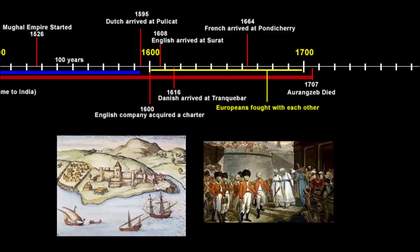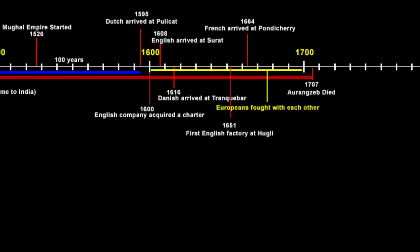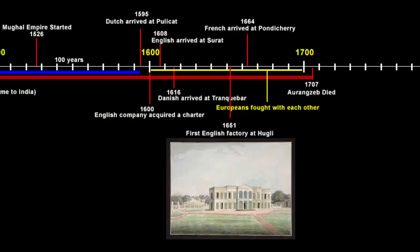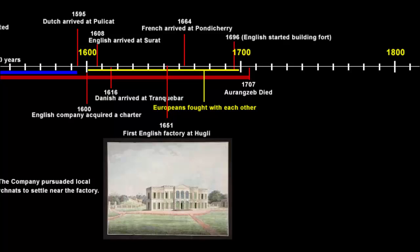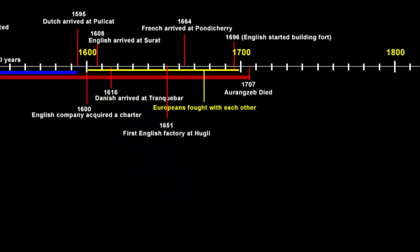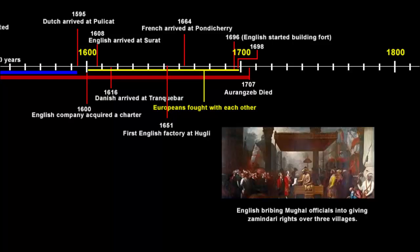This kept on going till 1651, when they finally decided to set up their first English factory on the banks of River Hooghly. This was an important step for the British because prior to this they only had a trading post. Now they actually built a fully equipped factory with warehouses to stock supplies and offices where company officials would sit. As trade expanded, the company persuaded merchants and traders to settle near the factory. By 1696, it began building a fort around the settlement, and in 1698 it bribed Mughal officials into giving the company zamindari rights over three villages.